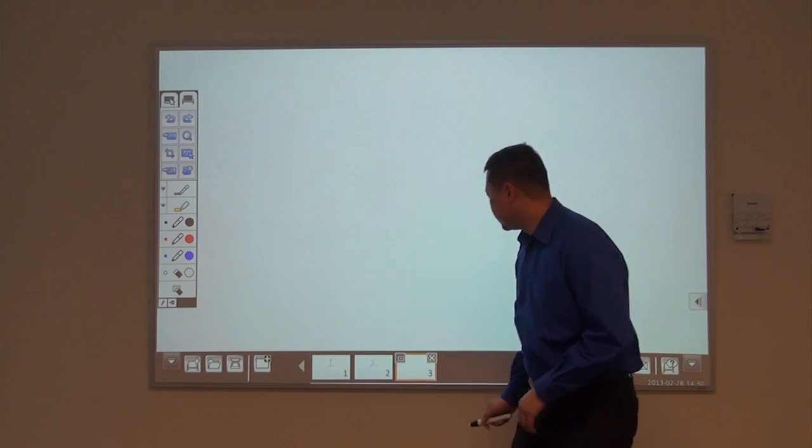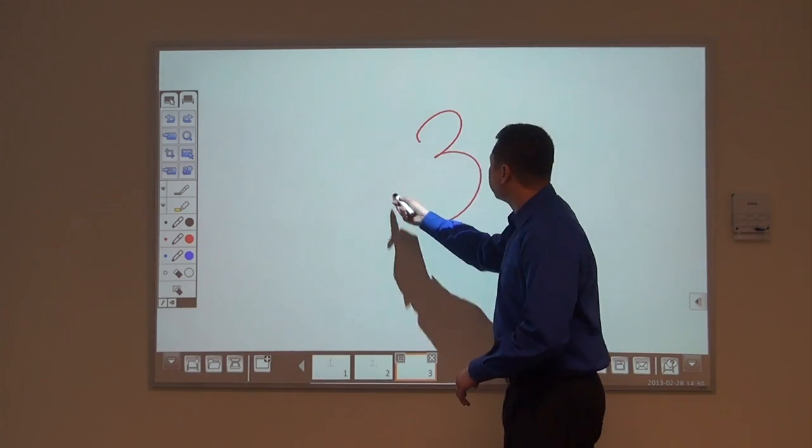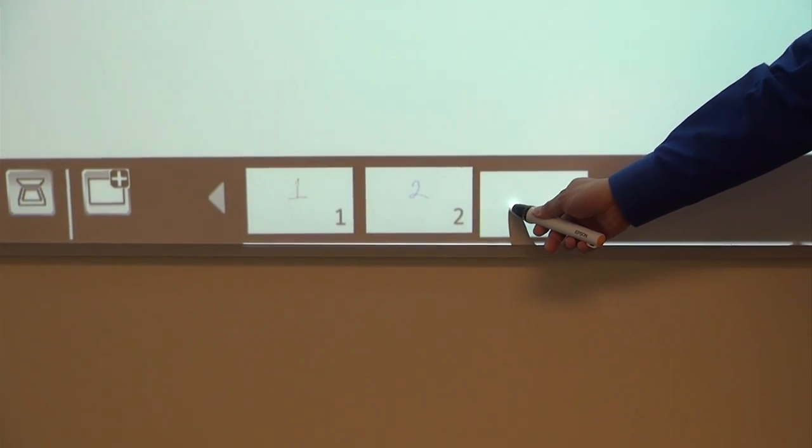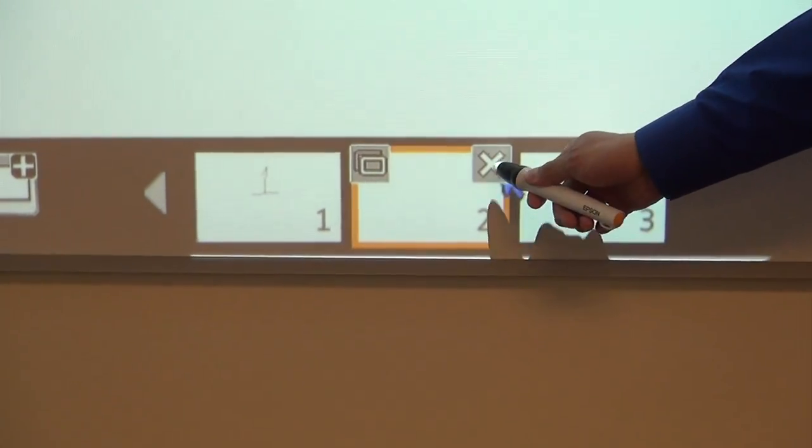Add another page. Make that page three. Move it by pressing down and sliding it over. And also delete the slide.